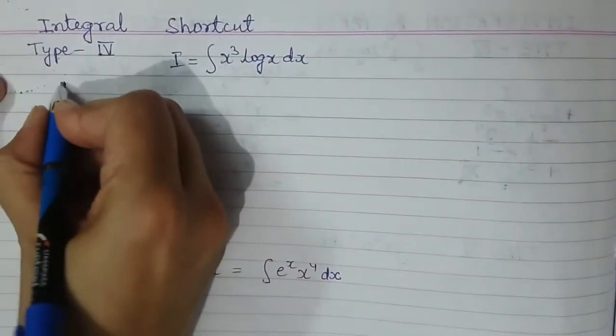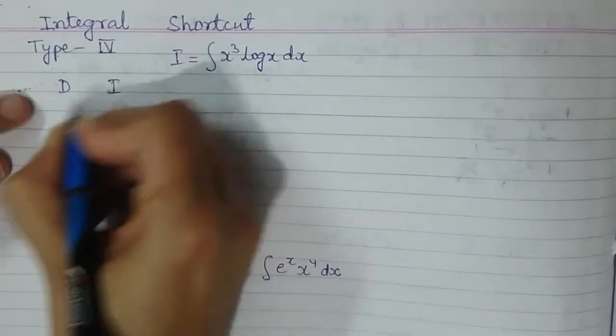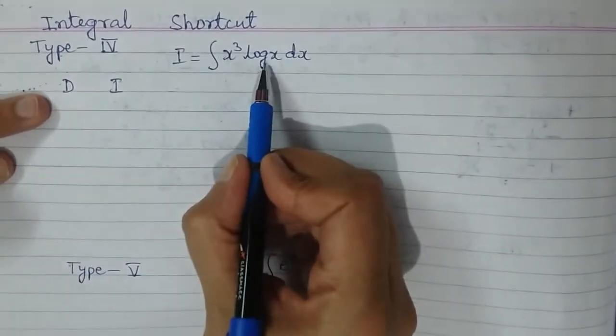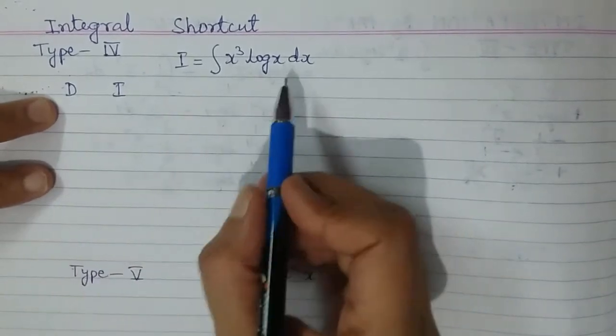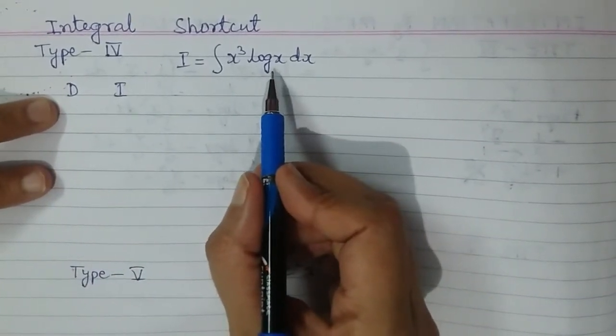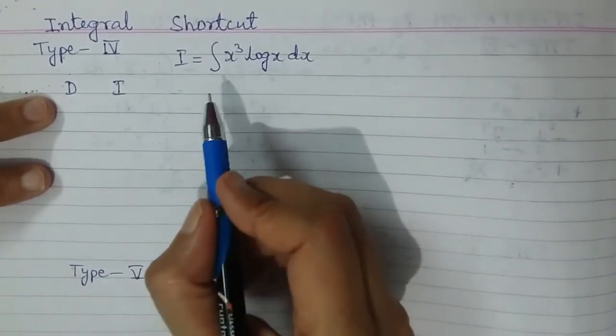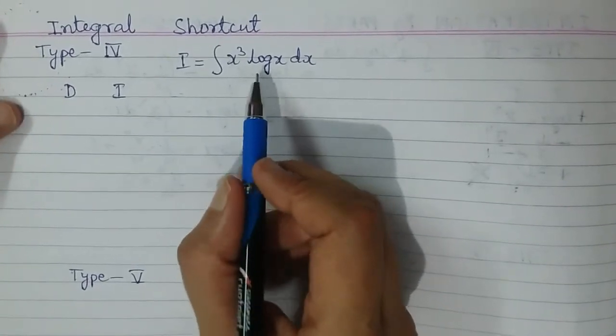DI method means differentiation and integration. Out of these two functions, one function I will choose for differentiation and the other one I will be choosing for integration, and I will successfully differentiate and integrate them.